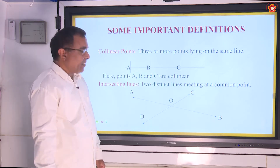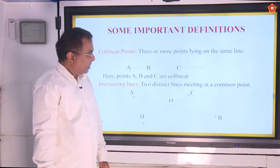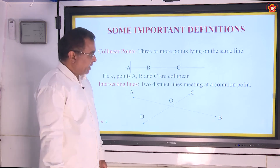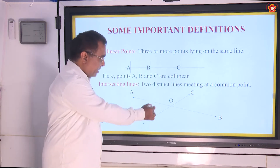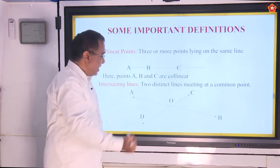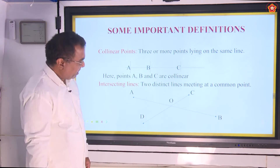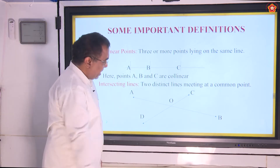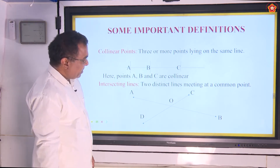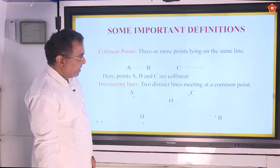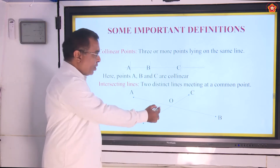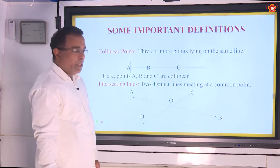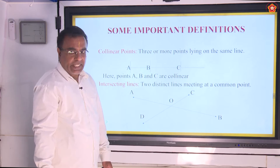Next, intersecting lines. If any two distinct lines are meeting at a common point, then they are known as intersecting lines. Here, the lines AB and CD are having a common point, meeting at a common point O. So, they are known as intersecting lines.